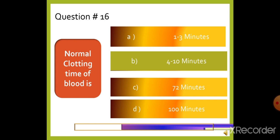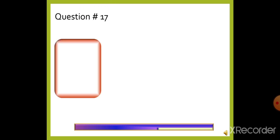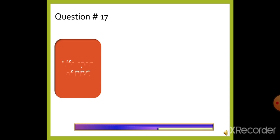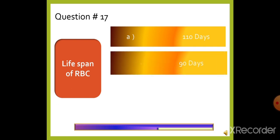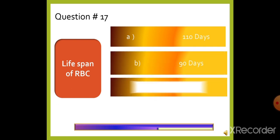Question 17: The life span of RBC is — option A: 110 days, option B: 90 days, option C: 120 days, or option D: 100 days. The right answer is option C, 120 days.